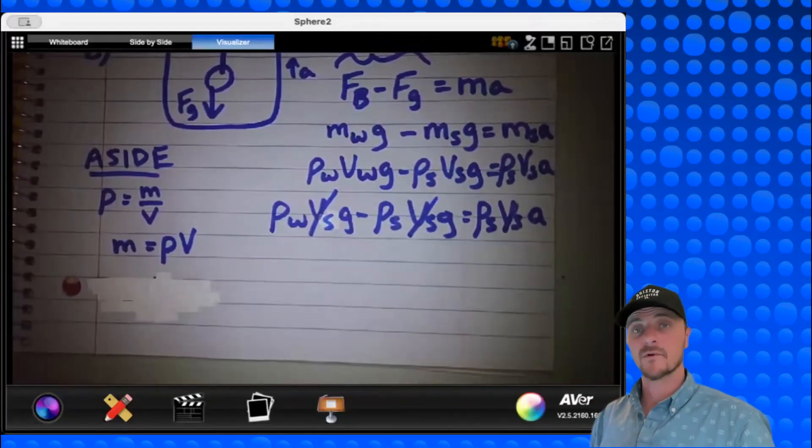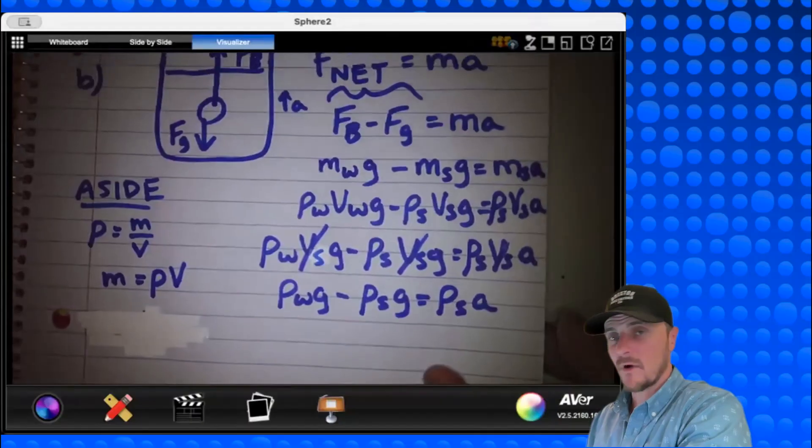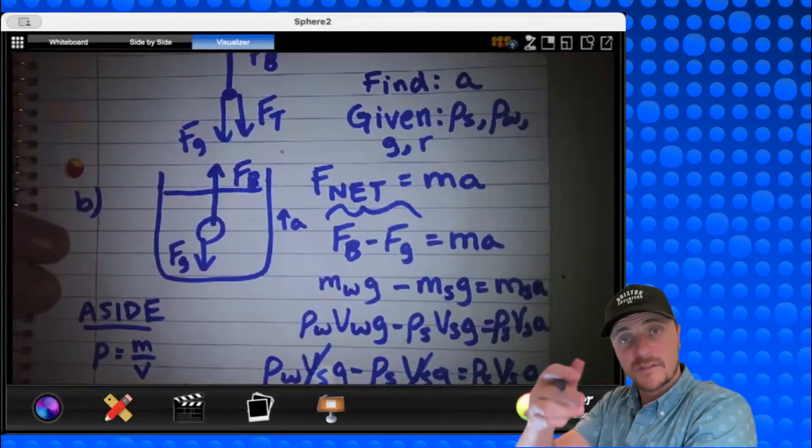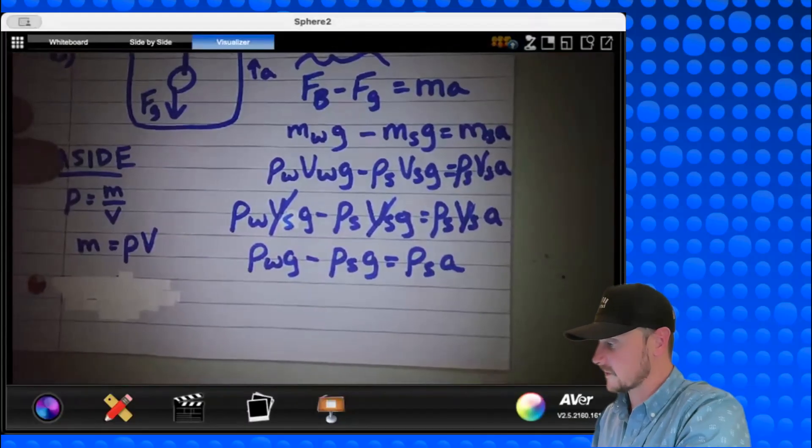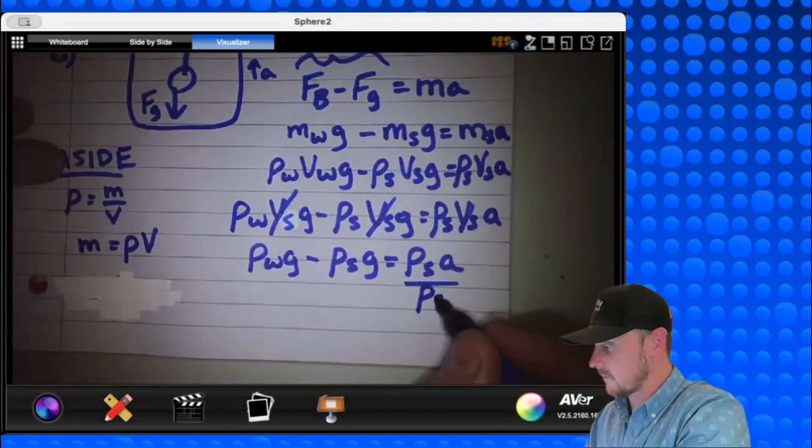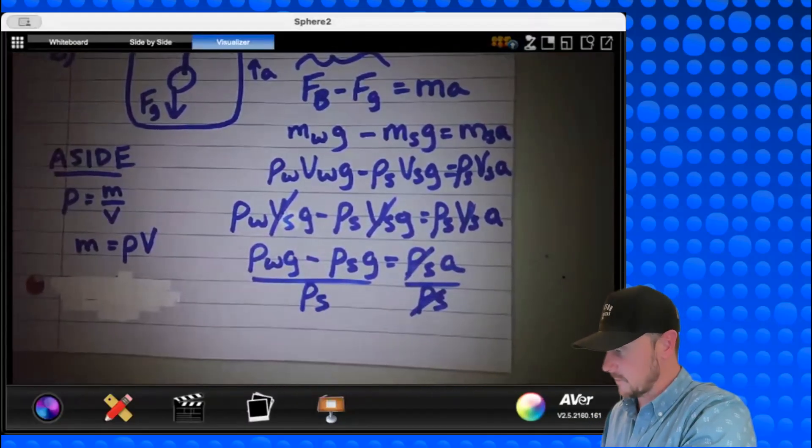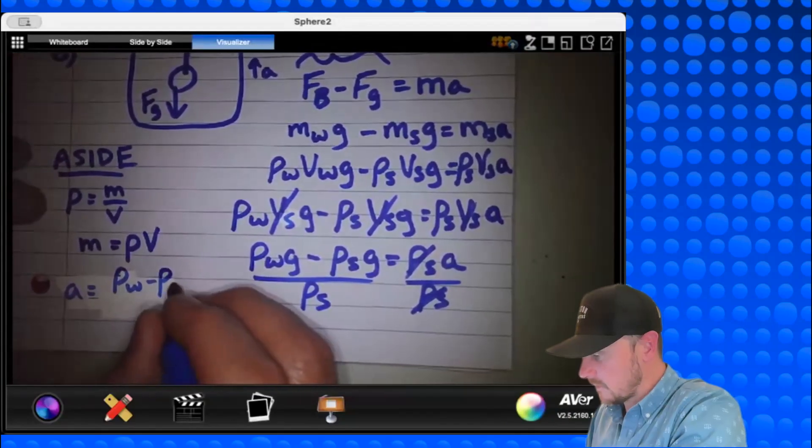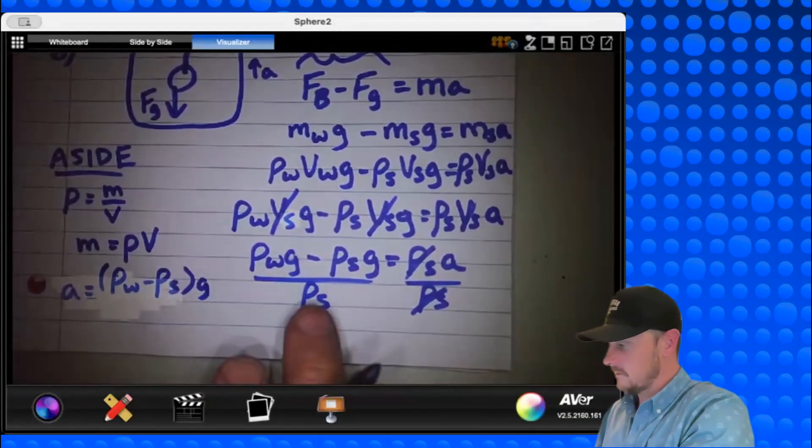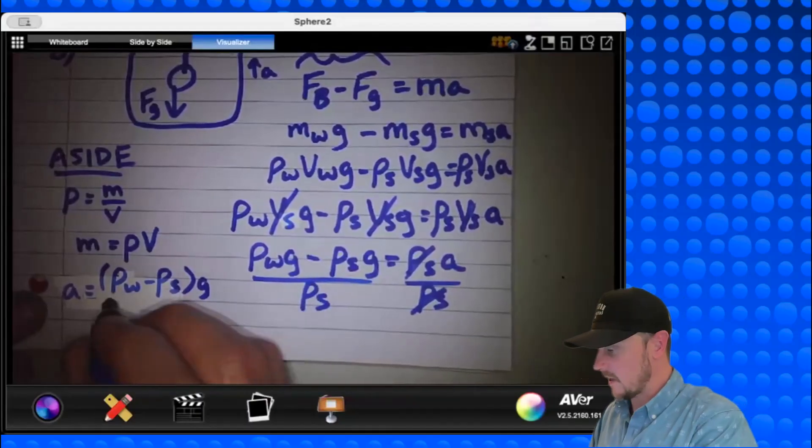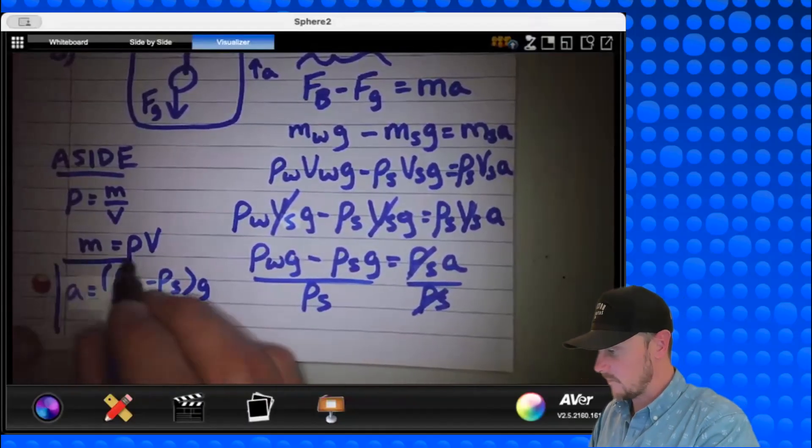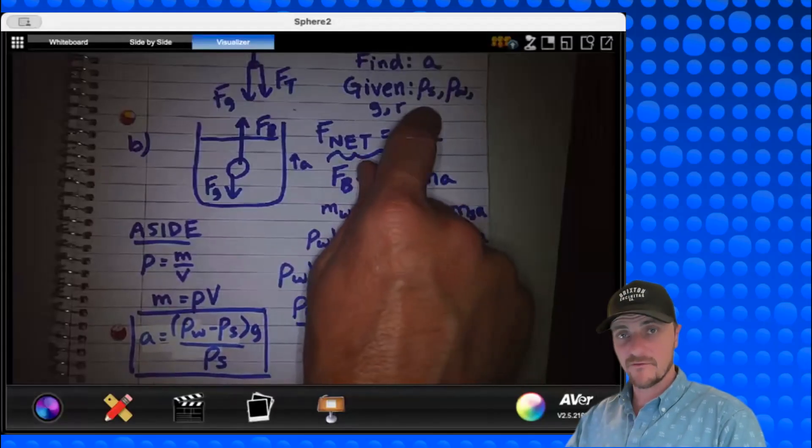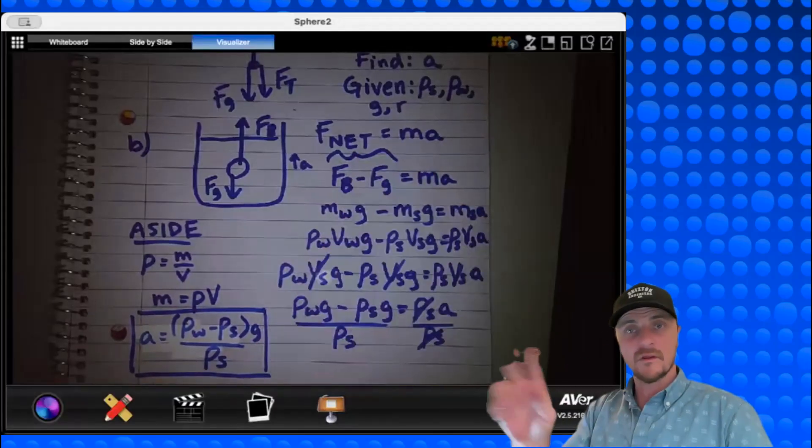And finally, recall that we're actually looking for the acceleration of the sphere as it surfaces. So if I'm going to look for acceleration, I'll divide both sides by rho s. And you're left with this expression right here. So a will equal rho water minus rho s all times g. I factored out the g to the outside, divided by rho s. And we're going to box that expression. Everything in our answer is part of the given information. We're good to go. Let's head to part c.